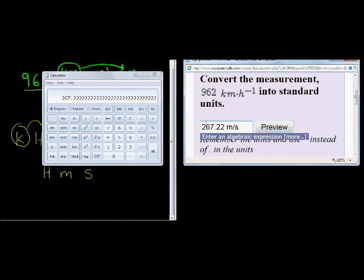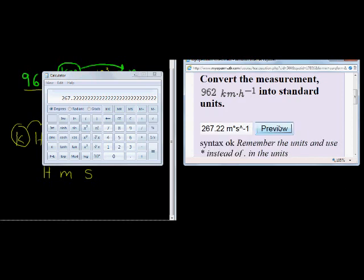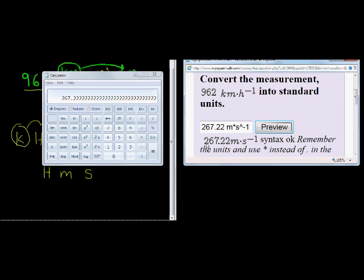So either way you can write it like this or like this—both answers should be perfectly okay. And let's just preview to make sure. There we go: 267.22 meters per second. Do you see how it changed the star into a multiplication or times dot? That's meters per second to the power of negative 1. There we go, good luck.